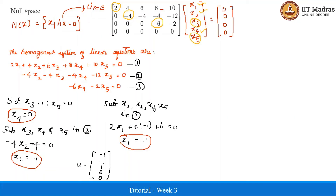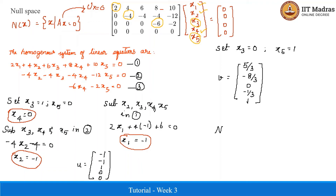Setting x3 equal to 0 and x5 equal to 1 and solving the set of linear equations gives a second vector v. The null space is the span of these two vectors u and v. The dimension of the null space equals the number of vectors in the null space, which is 2 — this is the nullity.